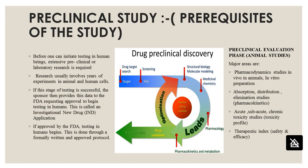The evaluation phases of the preclinical study using animal models cover the major areas: pharmacodynamic studies in vivo in animals and in vitro preparations, then absorption, distribution and elimination studies, acute and sub-acute studies, chronic toxicity studies, toxicity profile, and finally the therapeutic index and therapeutic efficacy. The diagram shows the sequence: target search, screening of hits, structural biology or molecular modeling, medicinal chemistry, pharmacology, pharmacokinetics and metabolism, optimization to obtain the lead compound, drug candidate, and finally proceeding to clinical trials.